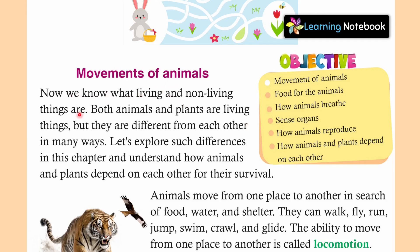Now, we know what living and non-living things are. Previous chapter में हमने पढ़ा था कि living things क्या होती हैं और non-living things क्या होती हैं. Both animals and plants are living things, but they are different from each other in many ways. Let's explore such differences in this chapter and understand how animals and plants depend on each other for their survival.